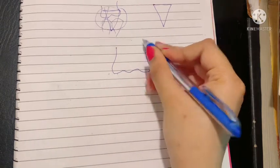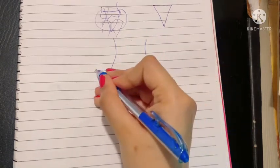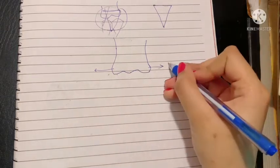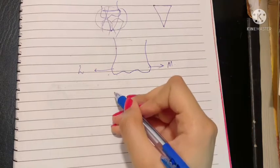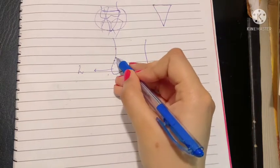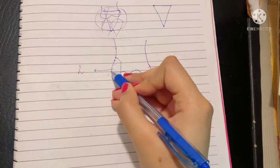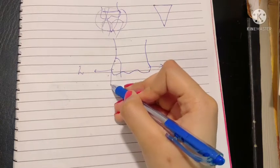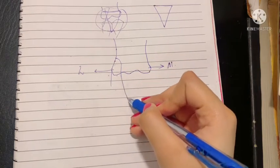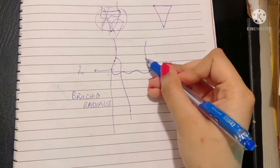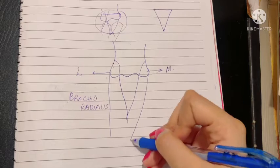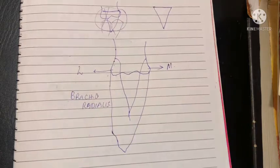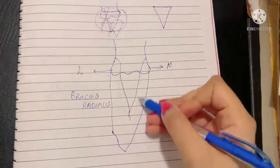This is the lower end of the humerus. This is the medial epicondyle and this is the lateral epicondyle. From the lateral side of the humerus, a muscle arises called the brachioradialis muscle, and from the medial side arises the pronator teres muscle. This is the area called the cubital fossa.